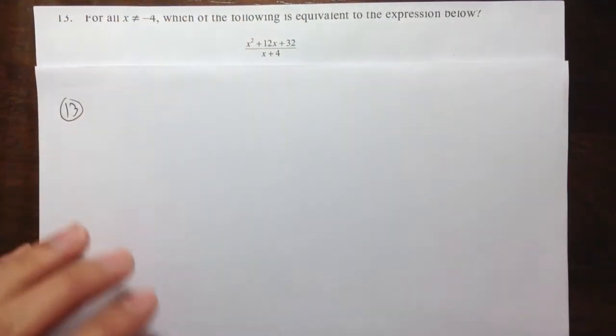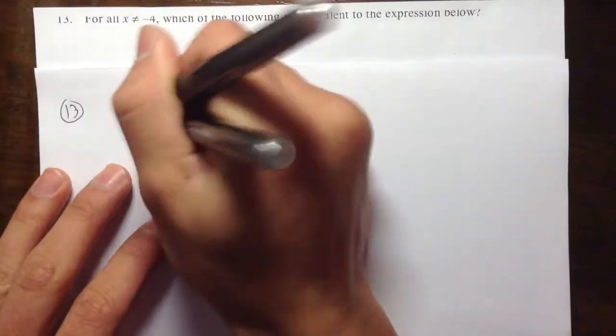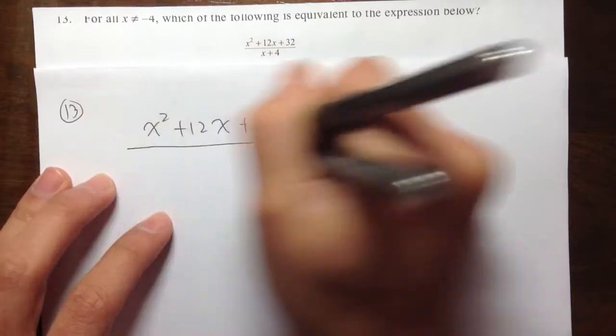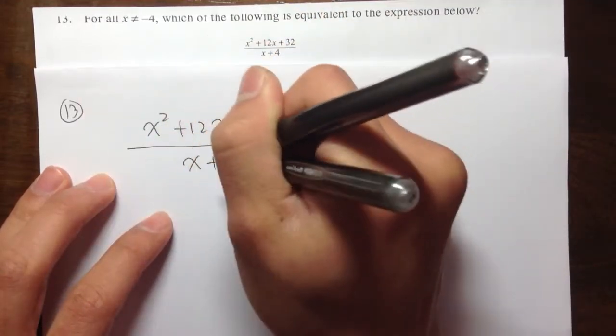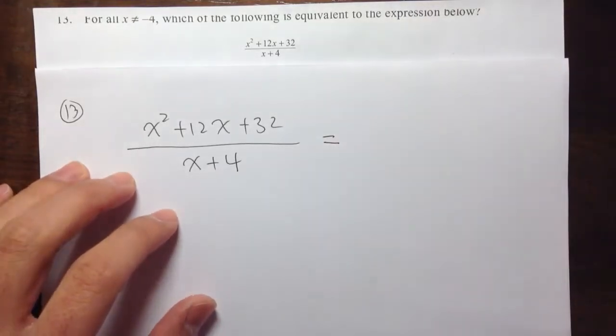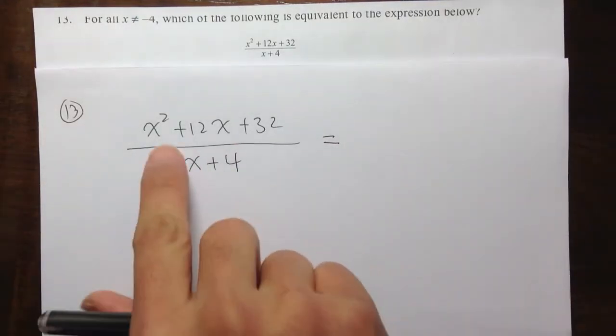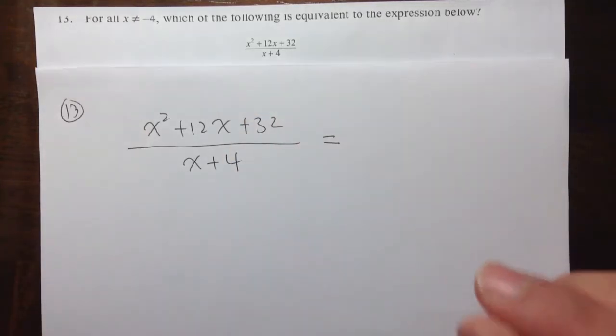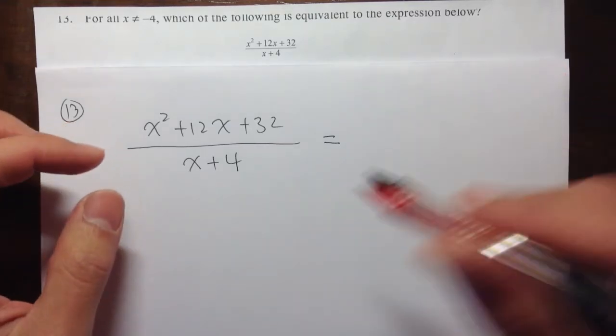So let's get to work. x squared plus 12x plus 32 over x plus 4. And how do we simplify this? The key here is we want to try to factor the top and bottom, and then we want to cancel the common factor. So we want to factor it if we can, and then we want to cancel the factors out if they have anything in common.